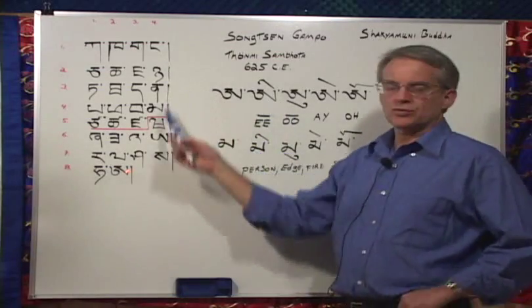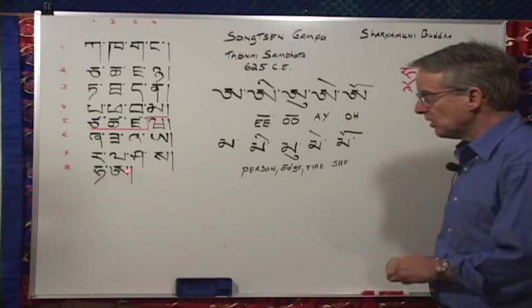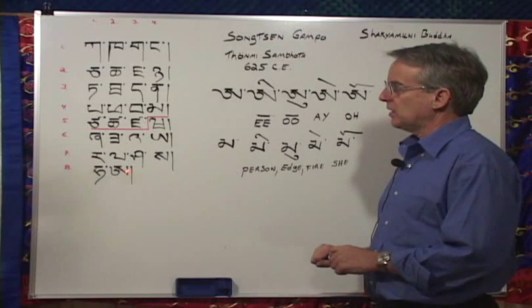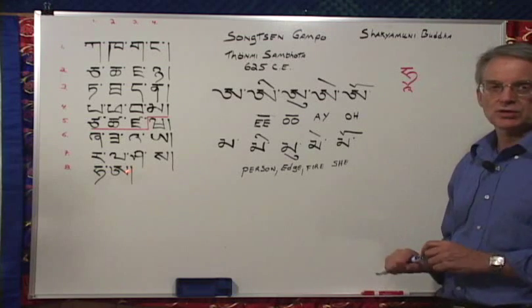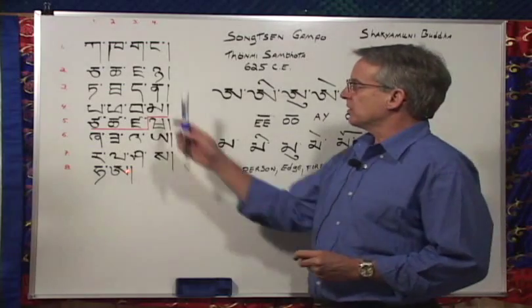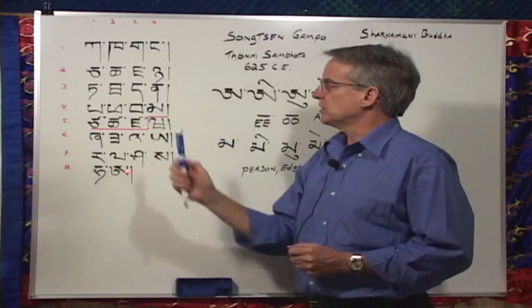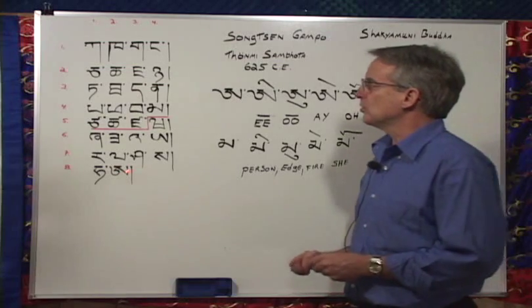Unlike English, several of the 30 consonants are actually words unto themselves. In the book, we have the middle section, the blue section of the level one book, which is the vocabulary section. In there are listed several of the 30 consonants which are also words.